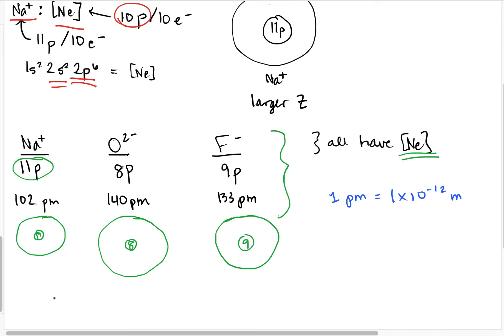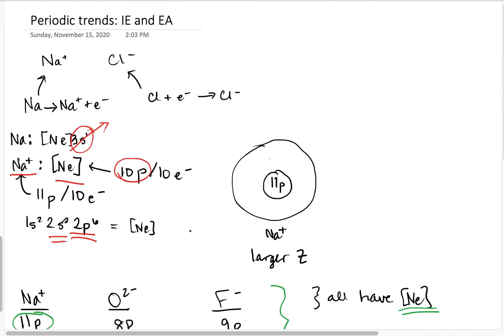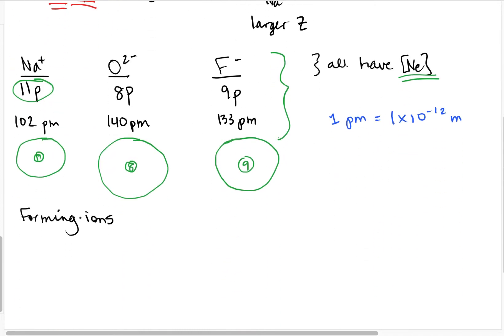Now that we're talking about ions, we need to talk about forming ions a little more. We have two different processes: previously we've called these oxidation and reduction, but in terms of our periodic trends we're going to talk about ionization, which specifically is oxidation — removing an electron one at a time.